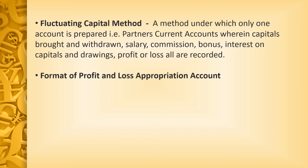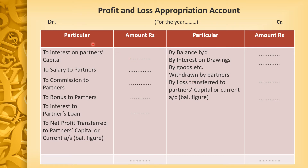Format of Profit and Loss Appropriation Account — the format has four columns: particular, amount, particular, amount — the left-hand side is debit and the right-hand side is credit. Profit and Loss Appropriation Account for the year ended 31st December or 31st March. First, to Interest on Capital — one important point: in the Profit and Loss Appropriation Account, capital and drawing should not be included, but interest on capital and interest on drawing should be included. So interest charged at 5% on capital will be written here.